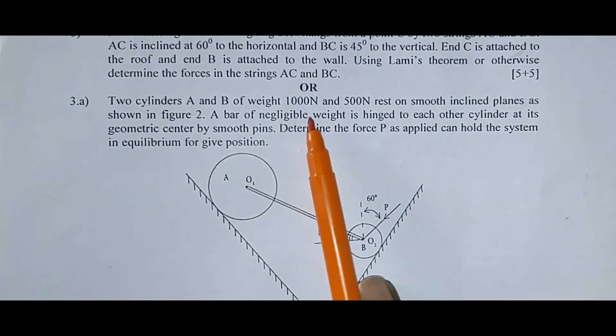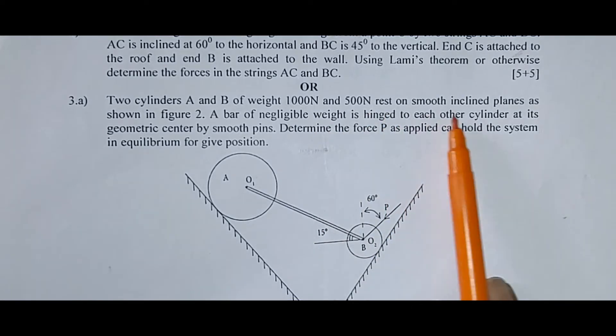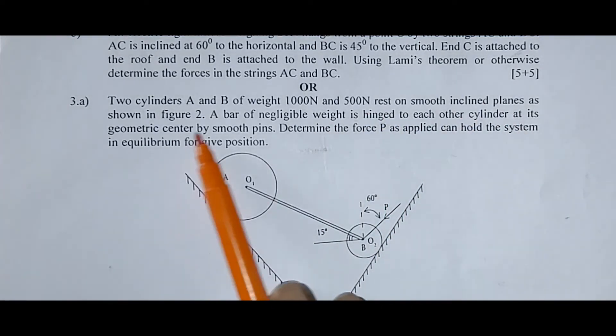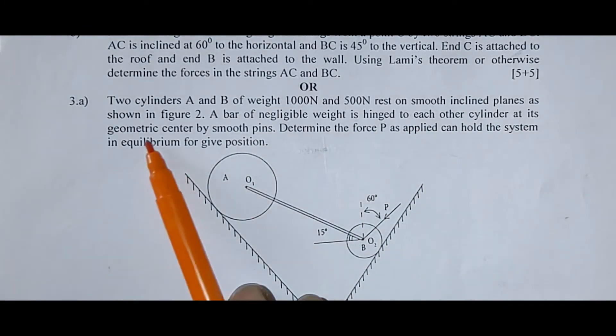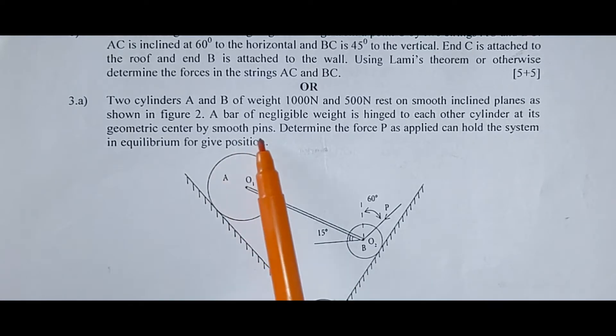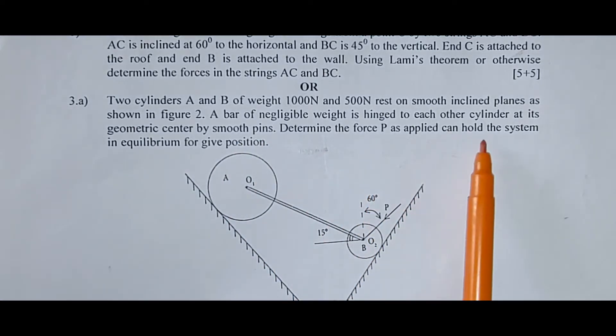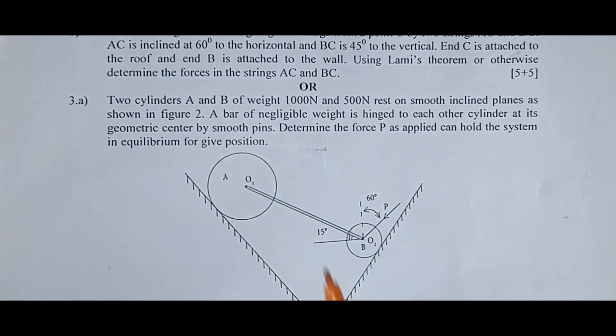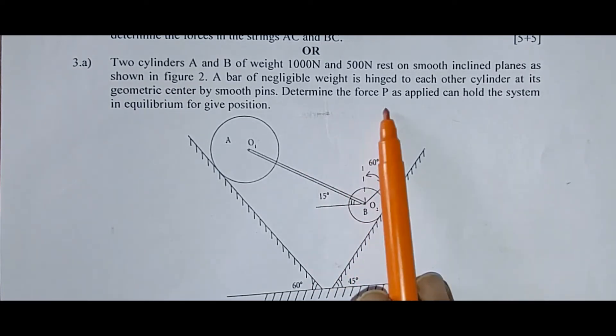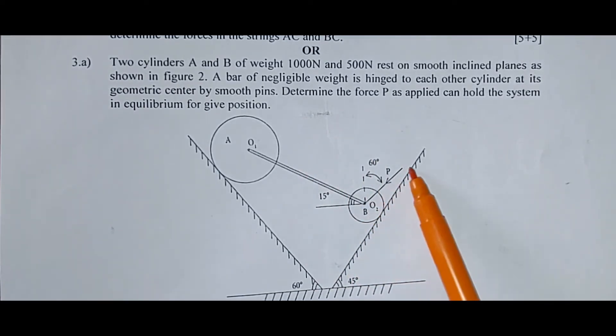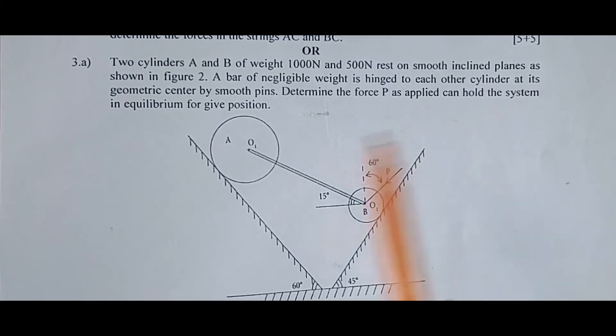Two cylinders A and B of weight 1000 N and 500 N rest on smooth inclined planes as shown in the figure. A bar of negligible weight is hinged to each other cylinder at its geometric center by smooth pins. Determine the force P as applied can hold the system in equilibrium for given position. So this is two cylinders, first cylinder A, second cylinder B. What we have to calculate here is, determine the force P. This is the force of P we have to determine as applied can hold the system in equilibrium for given position.